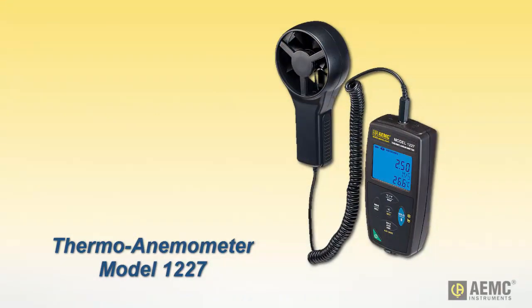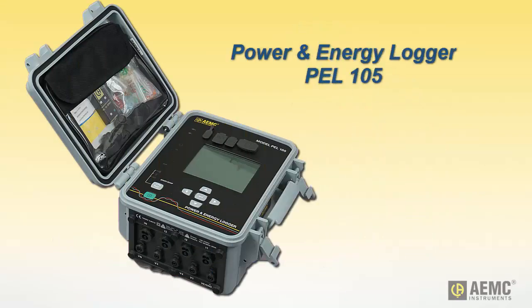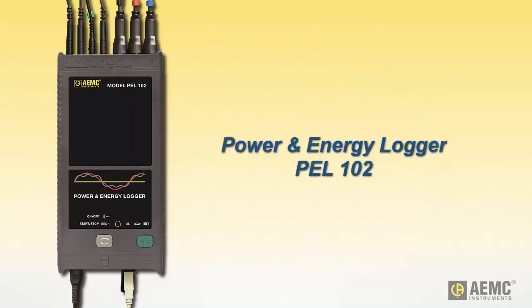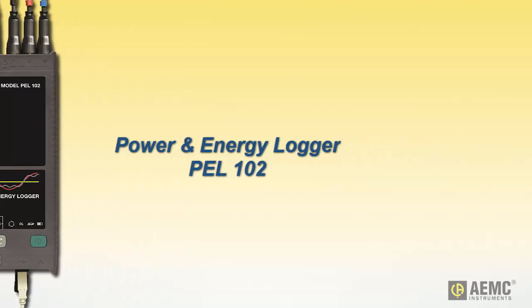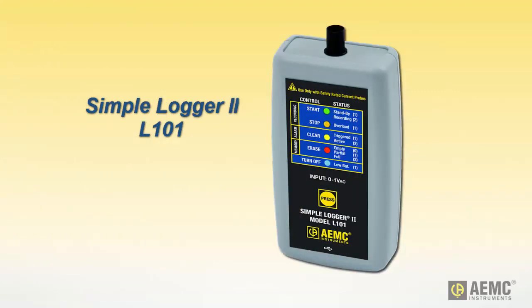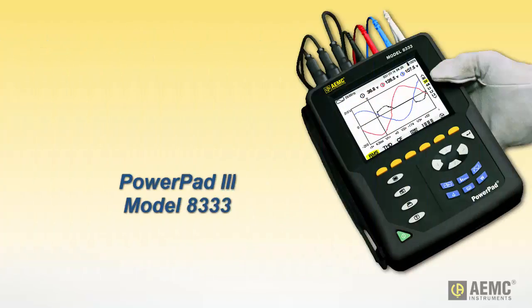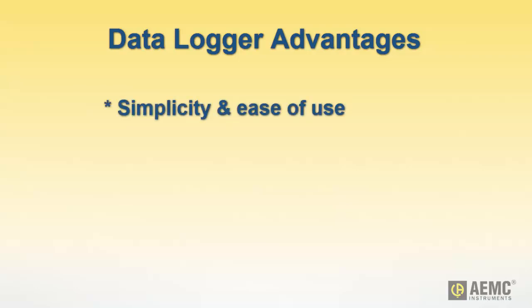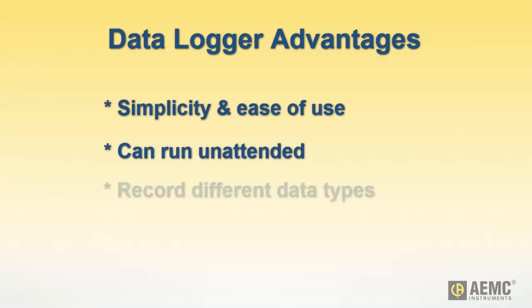Many data loggers are designed for very specific applications and environments, while others are more versatile and measure several different variables. Some instruments can operate as standalone devices; others must be connected to a computer for configuration and data download. They also range in complexity, from economical single-channel fixed-function loggers to more powerful programmable devices capable of processing multiple inputs. Monitored parameters can include environmental data such as air temperature and relative humidity, electrical data such as energy use and harmonics, and many others.